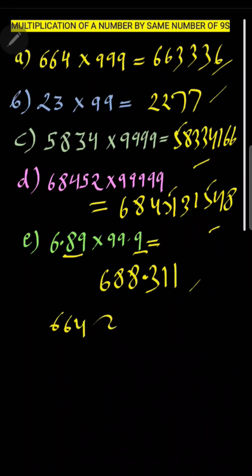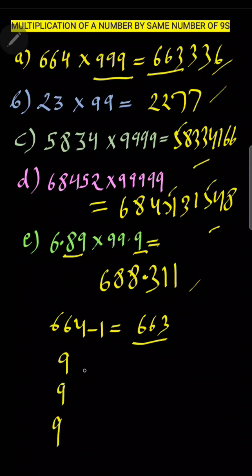So what you will do, you will minus one from this and then you will have 663, right? This is the first part of your answer as I have written over there. And then what you will do, you will write these three nines in this particular manner: 999.